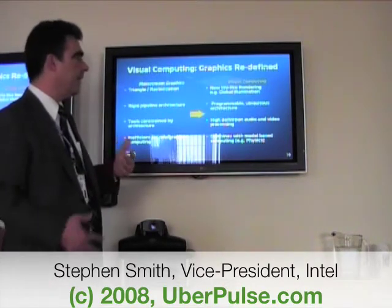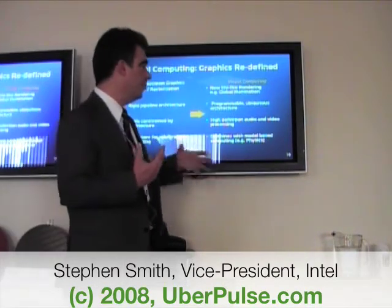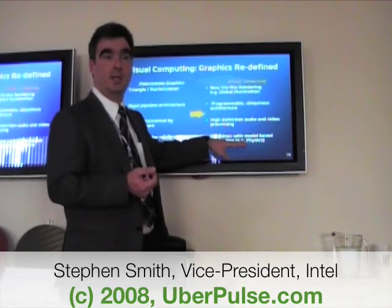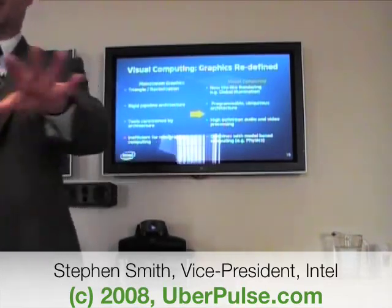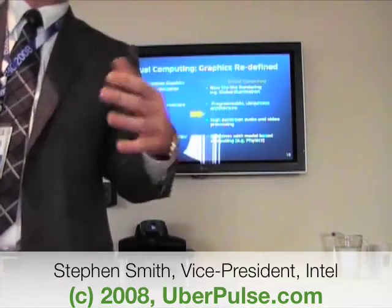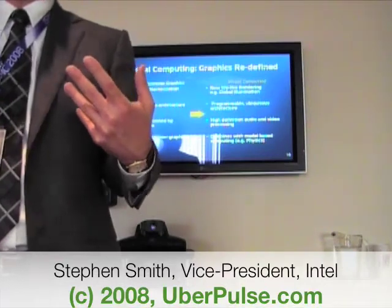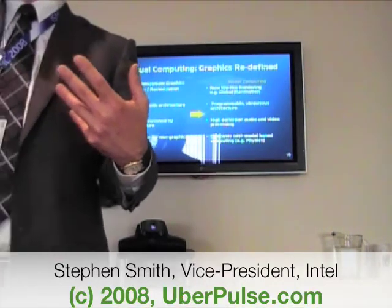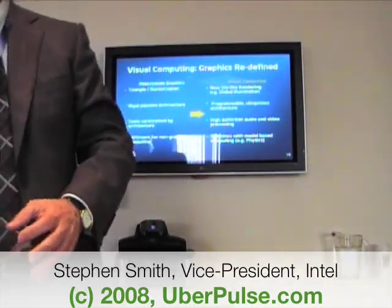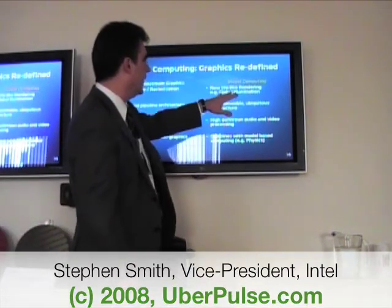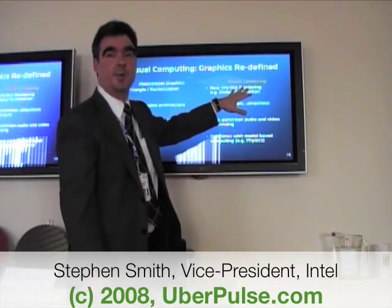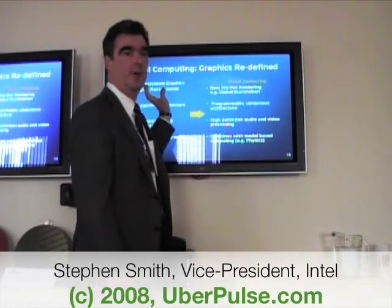For visual computing, we see that graphics has to be based more on physics — physical modeling. If you're trying to model all the items here on this table and how the light impinges on them to get a realistic-looking image, you need to do a lot of computation — ray tracing, finding the path of a photon going through glass, reflecting off a table, or blurred by a semi-reflective surface. A lot of computing is required to get to lifelike rendering.